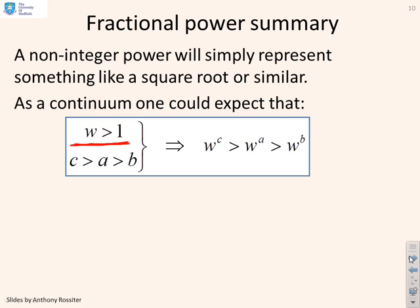So a non-integer power will represent something like a square root or similar and if we put these as a continuum, this is what we expect. If w is bigger than 1, that's quite a big assumption, and c is bigger than a, is bigger than b, then w to the power c is bigger than w to the power a, which is bigger than w to the power b.